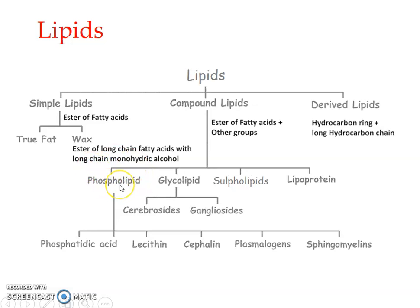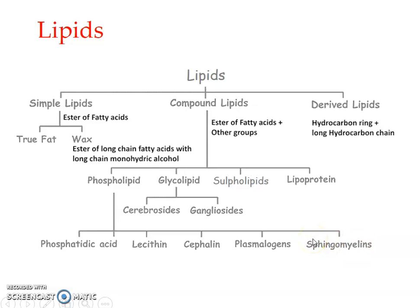Phospholipids can be divided into three types: phosphatidic acid (or phosphoglycerides), plasmalogens, and sphingomyelins (or sphingolipids).